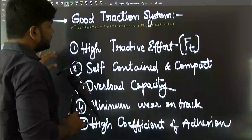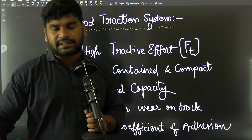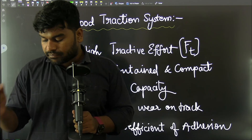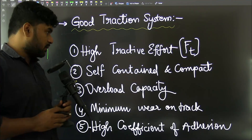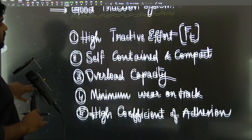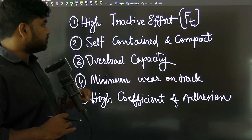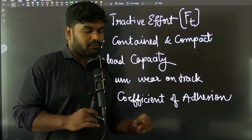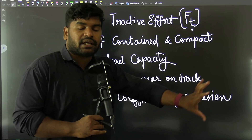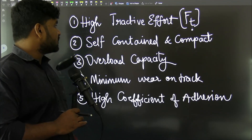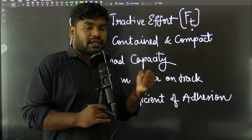A good traction system has several qualities. First, high tractive effort — tractive effort (Ft) is the original driving force of the vehicle; it must be high enough to propel the vehicle, representing the engine capacity. Second, it should be self-contained and compact — the source of energy should be within the vehicle or externally supplied, and the system should be as compact as possible, not bulky.